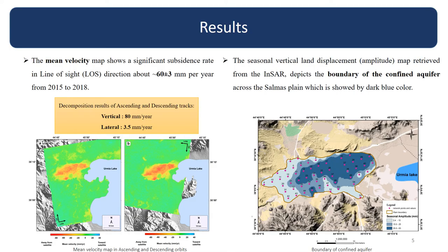The mean velocity map shows a significant subsidence of about 60 millimeters in the middle and eastern part of the plain. You can see both the ascending and descending mean velocity maps. We decompose them into the vertical and lateral deformation. Based on the vertical and lateral displacement, we can reasonably assume that the line-of-sight displacement is strongly related to the vertical components rather than lateral ones. So, we can use the vertical components for other parts of the analysis.